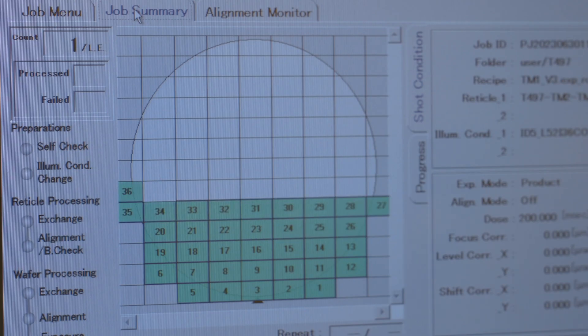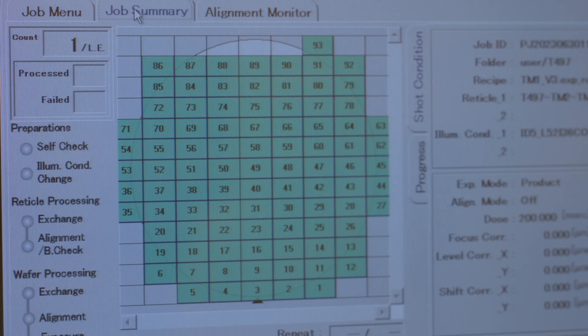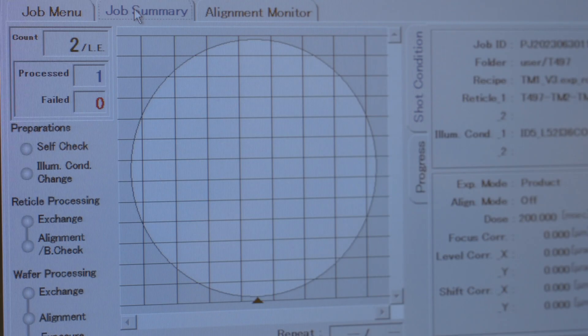It's an SF150 NSR step and repeat system from Nikon. And over there we have the DUV stepper, step scanning system, that we use for our smaller structures, for the critical layers, especially that's what this tool is for.